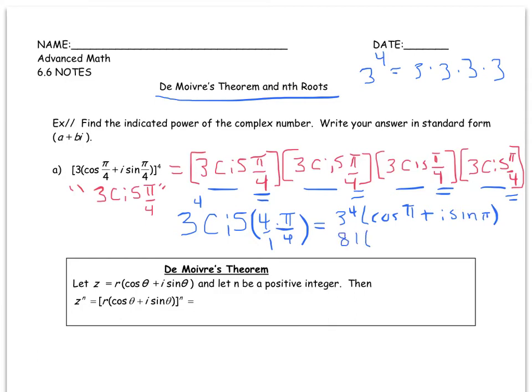So this is 81 times the cosine of pi, which is negative 1, plus i times the sine of pi, which is 0. And so now I'm left with 81 times the negative 1, which is a negative 81. So this complex number over here raised to the 4th power turns out just to be negative 81.